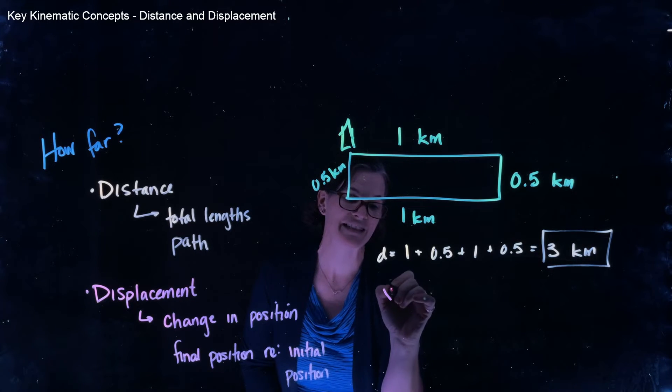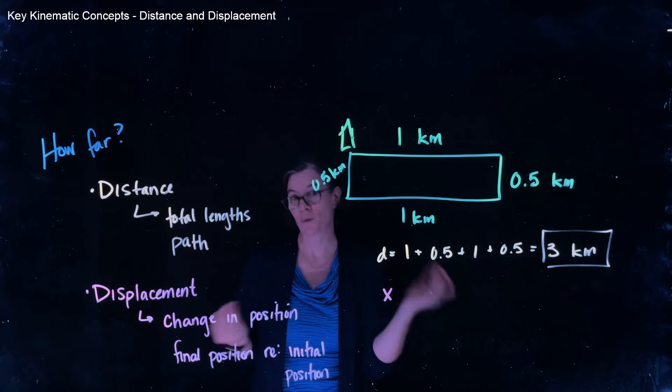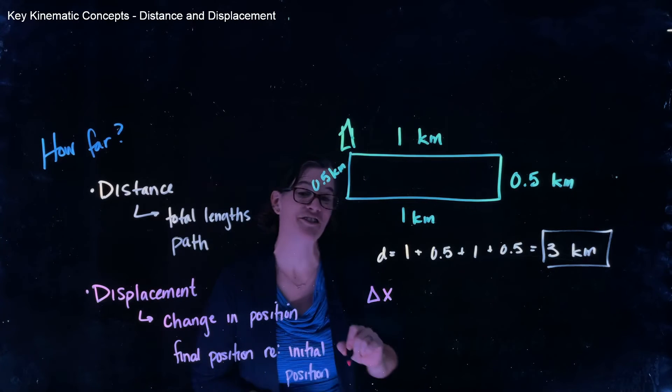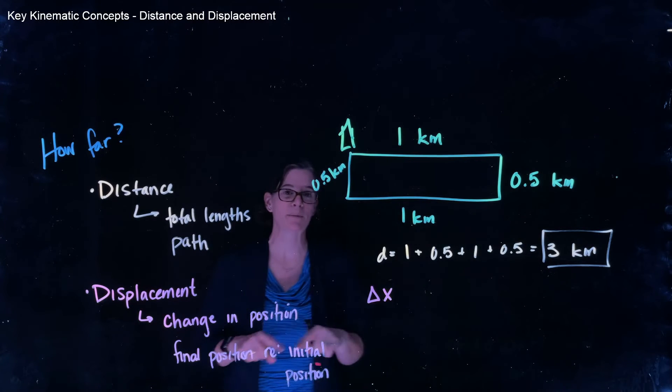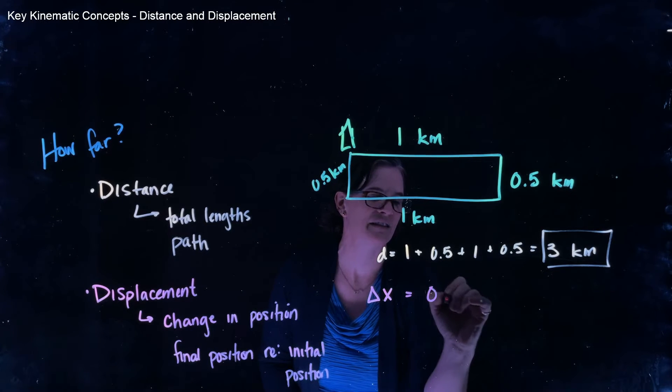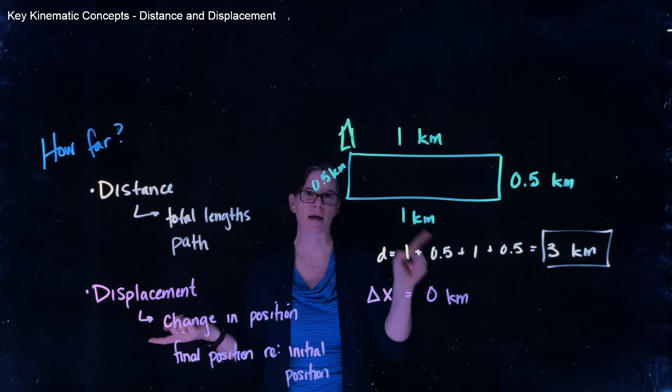which we represent often with an x or any one of the coordinate systems, we can talk about it as a change, that delta symbol, a change in position. This, in this case, would be zero kilometers. She ended up right back where she started.